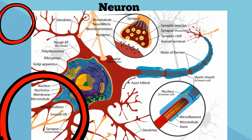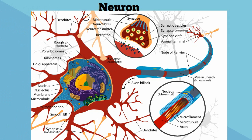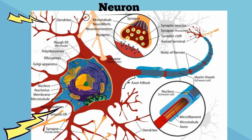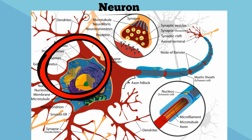They also have structures called dendrites, and they look a bit like tree branches. These dendrites receive electrical signals from other neurons.